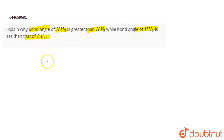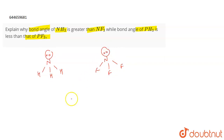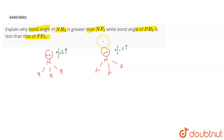Now if we talk about NH3, this is the structure for NH3 — there's one lone pair on nitrogen and three hydrogen bonds. Similarly, this is the structure for NF3 with its lone pair. Now both of these have lone pairs of electrons. The percentage s-character increases due to the presence of the lone pair of electrons, and due to the presence of electronegative atoms like fluorine, the percentage s-character decreases.